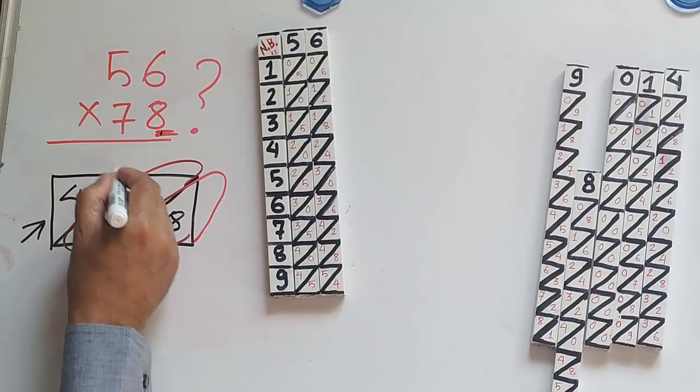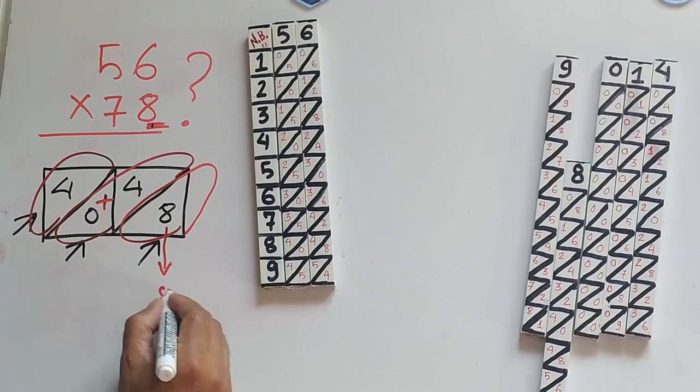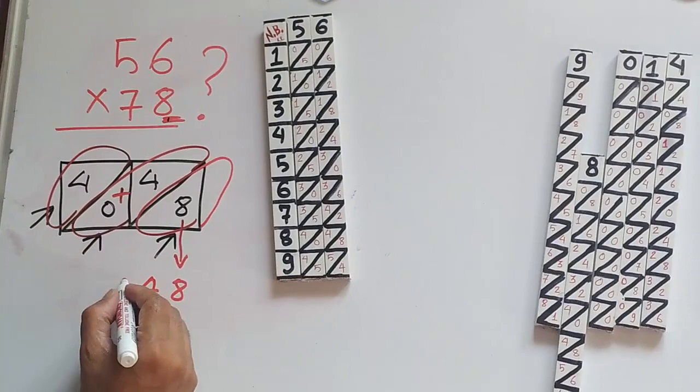So the answer will be 8, 0 plus 4 is 4, and 4. So we got the answer of 8's: 448.